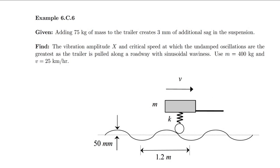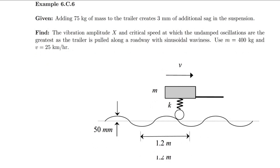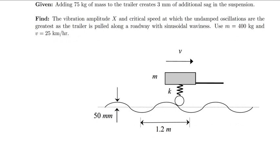In this example we have a trailer comprising a mass-spring system which is pulled along the road at some speed v. We're given information about the road profile — namely that it's sinusoidal in nature, with an amplitude and wavelength profile as given. We're also told that adding some additional mass to the trailer creates additional sag in the suspension. What we want to find is the vibration amplitude x and the critical speed at which the undamped oscillations of the trailer are greatest as it's pulled along the roadway.